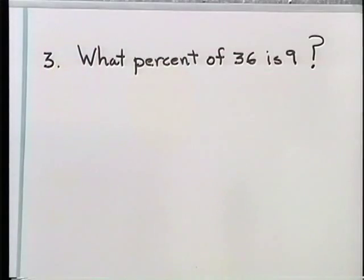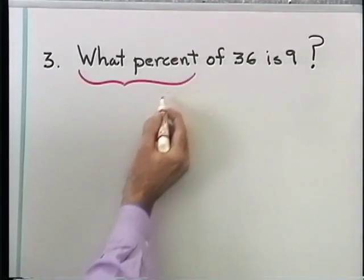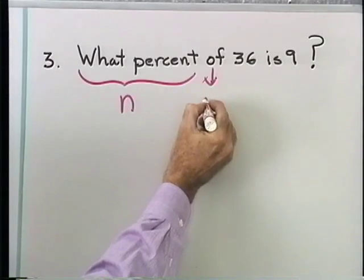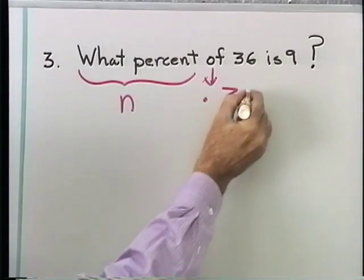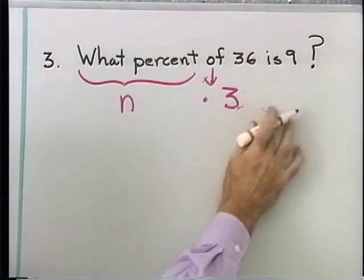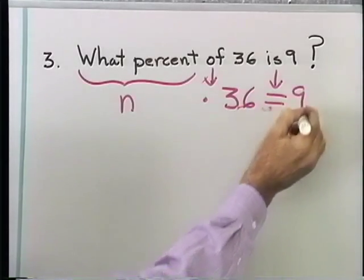Let's take a look at our next example. Problem three, we have what percent of 36 is 9? Let's just continue our mechanical translation. What percent is n, of translates as multiply 36. Let's write a 36 instead of a 32. And then is translates as equal, and then the number 9.